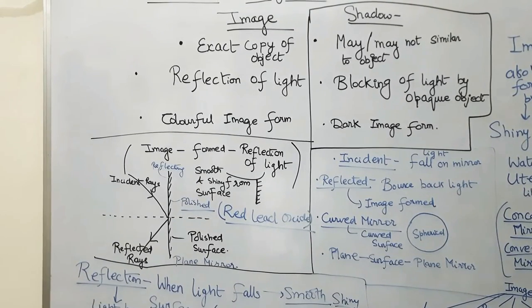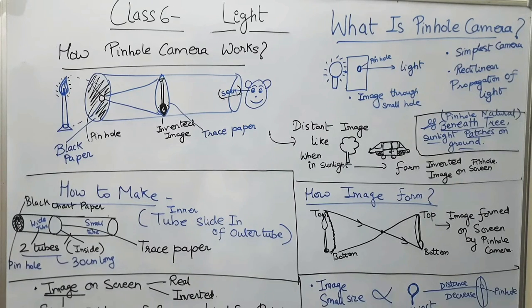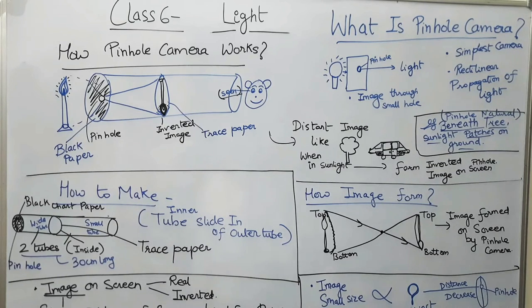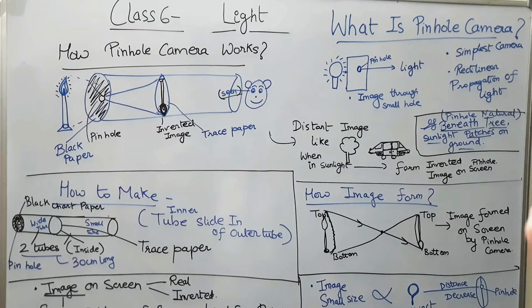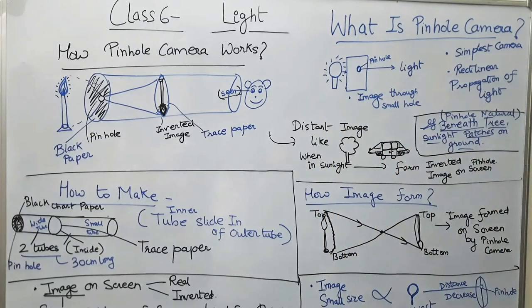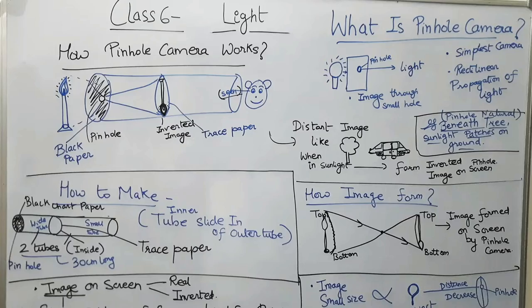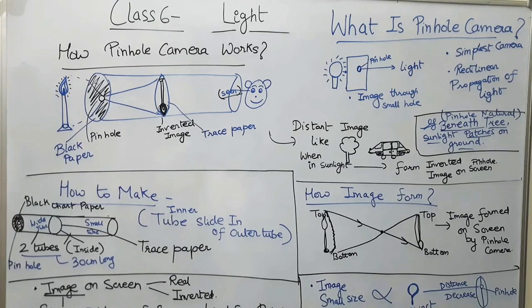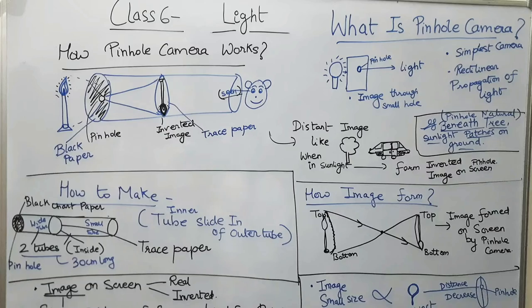Next is the pinhole camera. In this lecture, we will study about the pinhole camera — how it works, how to make it, what image is formed, and what sizes of images are formed. A pinhole camera is the simplest camera, which you can also make at home. It is based on the rectilinear propagation of light. Light passes through a pinhole from a bulb or any light source, and an image is formed on a screen at the other end.